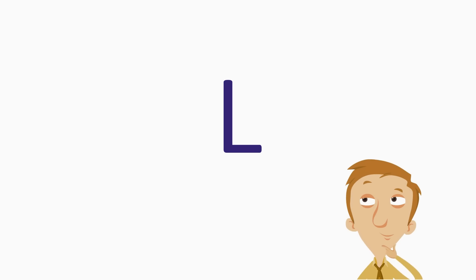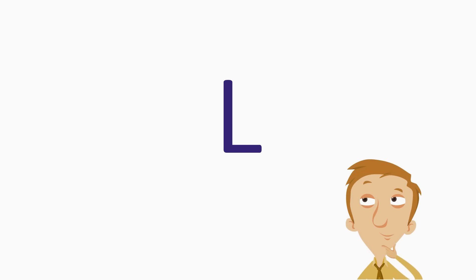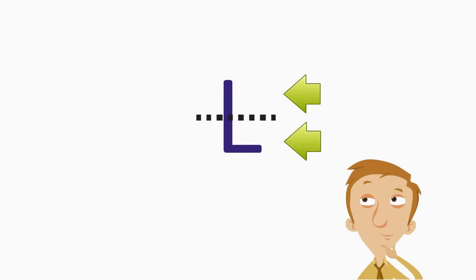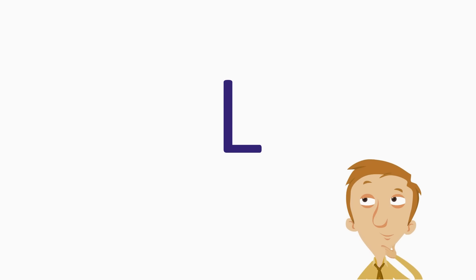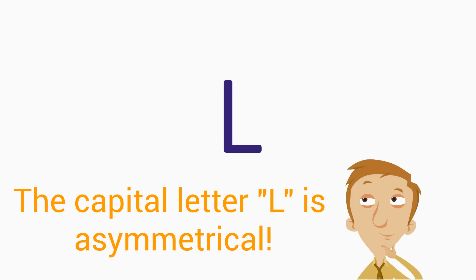We tried to see if it had a vertical line of symmetry, but these sides don't match. Then we tried to see if it had a horizontal line of symmetry, but the sides did not match, so there is no horizontal line of symmetry either. The capital letter L is asymmetrical. Asymmetrical means it does not have symmetry.